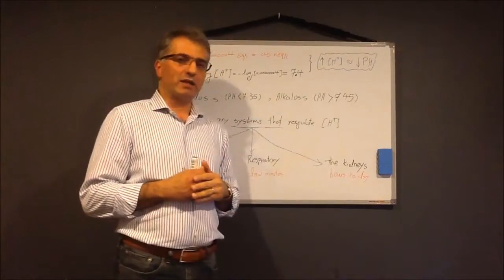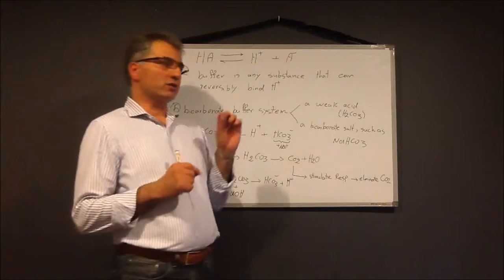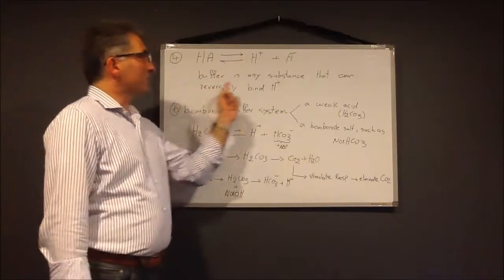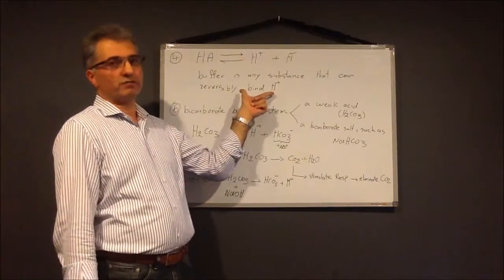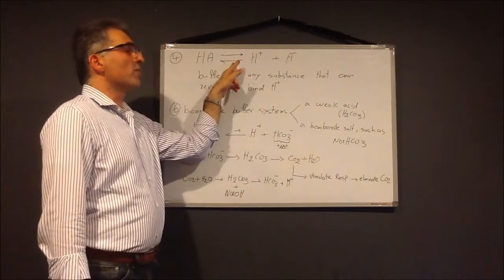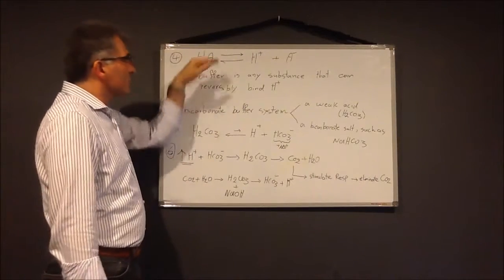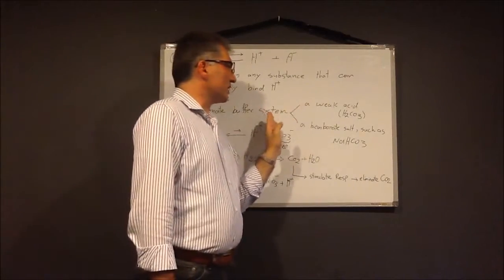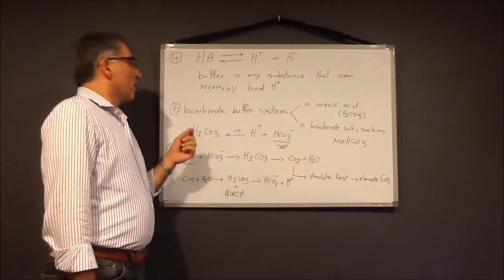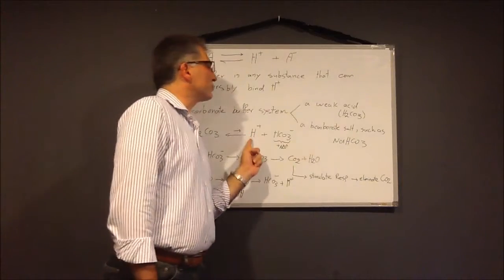Now I'm going to talk about each of these regulatory systems briefly. The buffer system: a buffer is any substance that can reversibly bind with a proton. The bicarbonate buffer system uses a weak acid and bicarbonate salts like NaHCO3. The buffer system is reversible — H2CO3 can dissociate into a proton and bicarbonate.